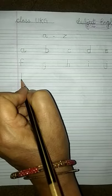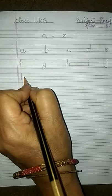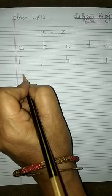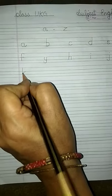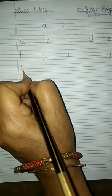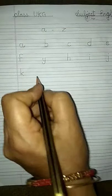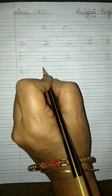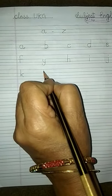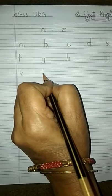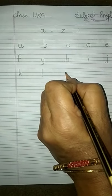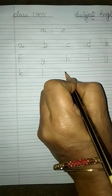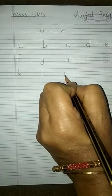Now L — one standing line from the red line to the second blue line: L. M — one standing line in between the two blue lines, and one curve coming downward and another curve coming downward: M.